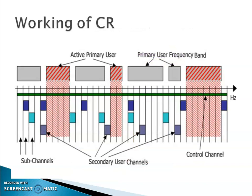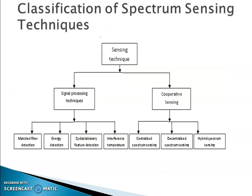This is explained in terms of bandwidth. Some of the classification of spectrum sensing techniques: we have two major forms — one is the signal processing technique and the other is cooperative sensing. Under signal processing sensing we have four sub-classifications: matched filter detection, energy detection, cyclostationary feature detection, and interference temperature. Under cooperative sensing we have three more sub-classifications, including centralized and hybrid spectrum sensing.